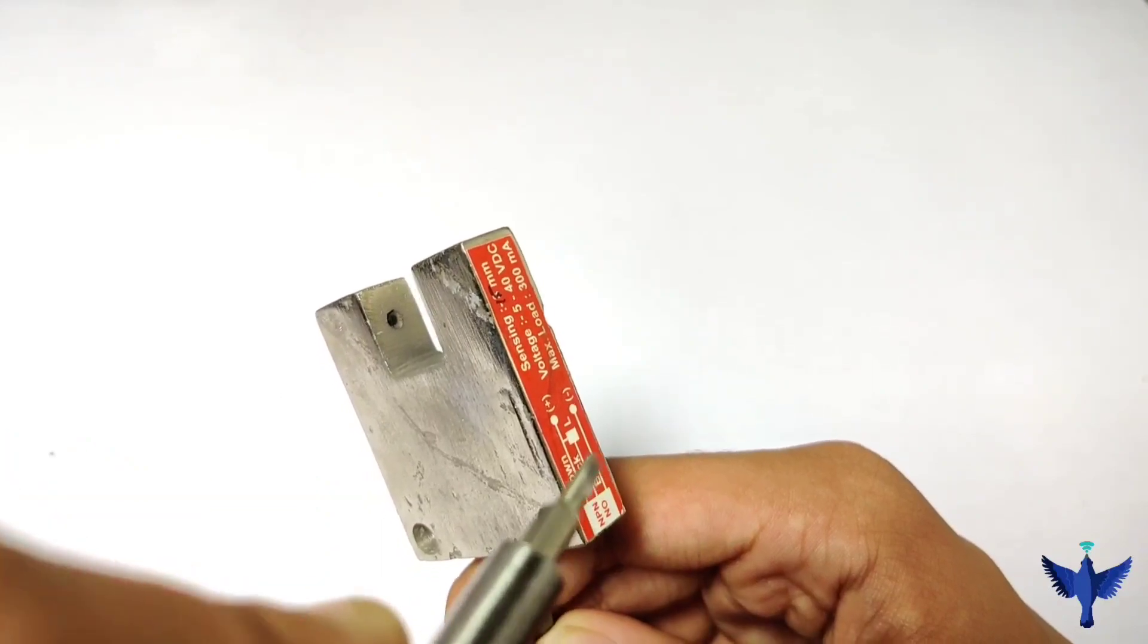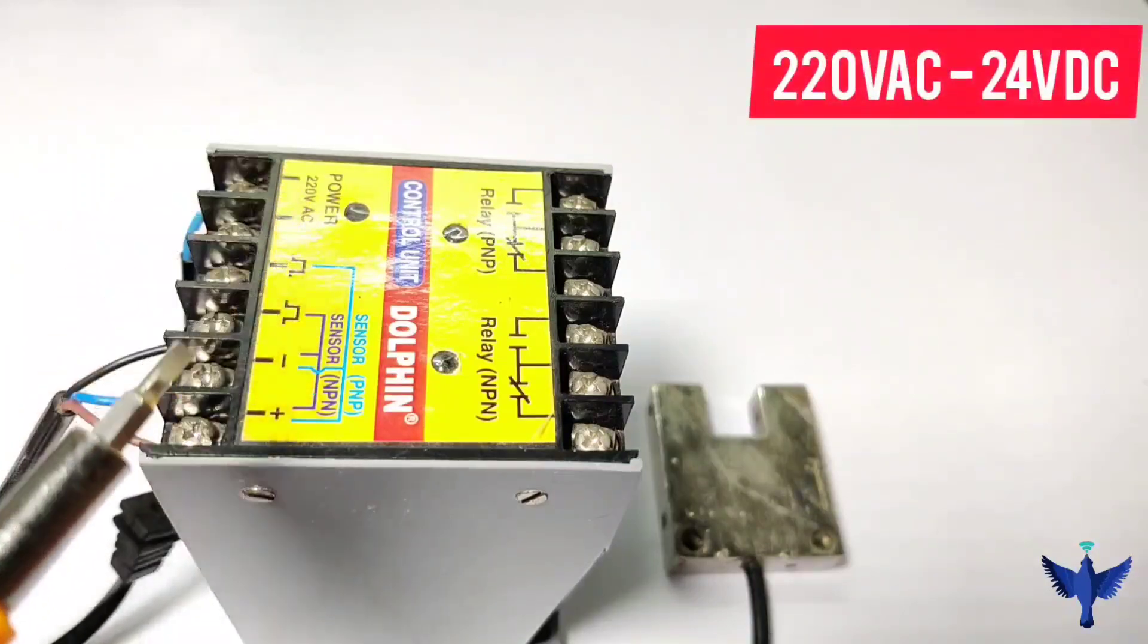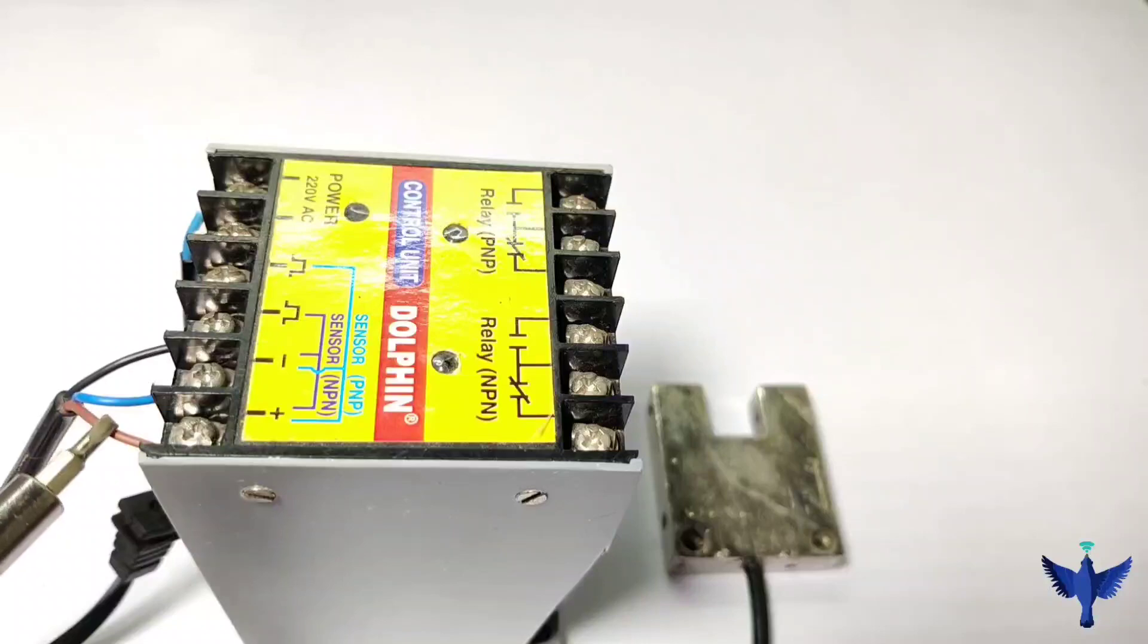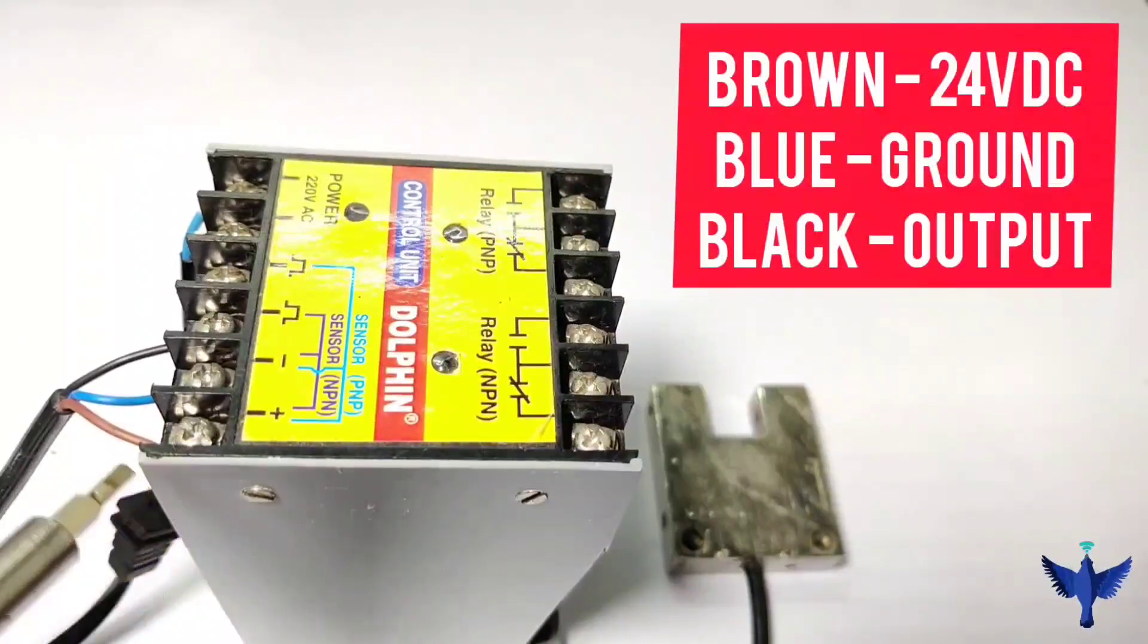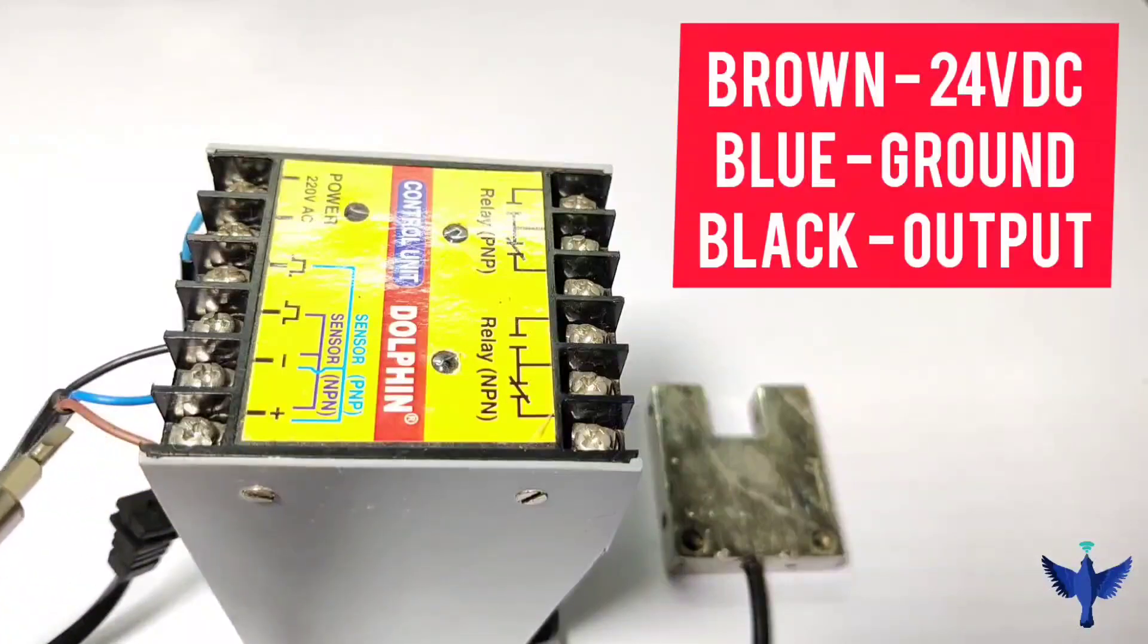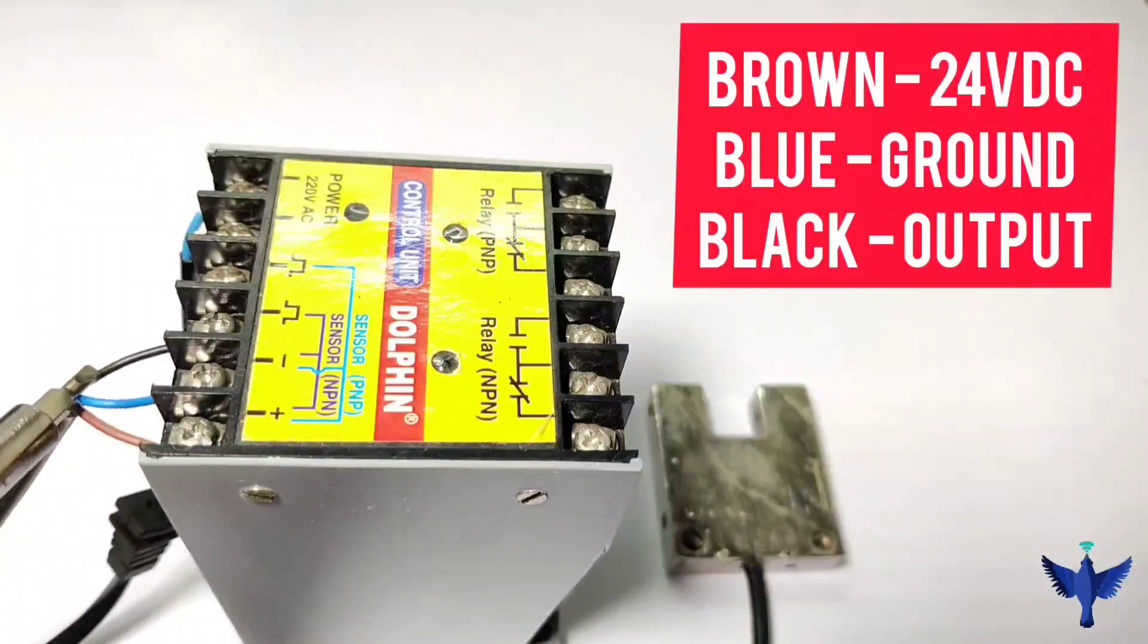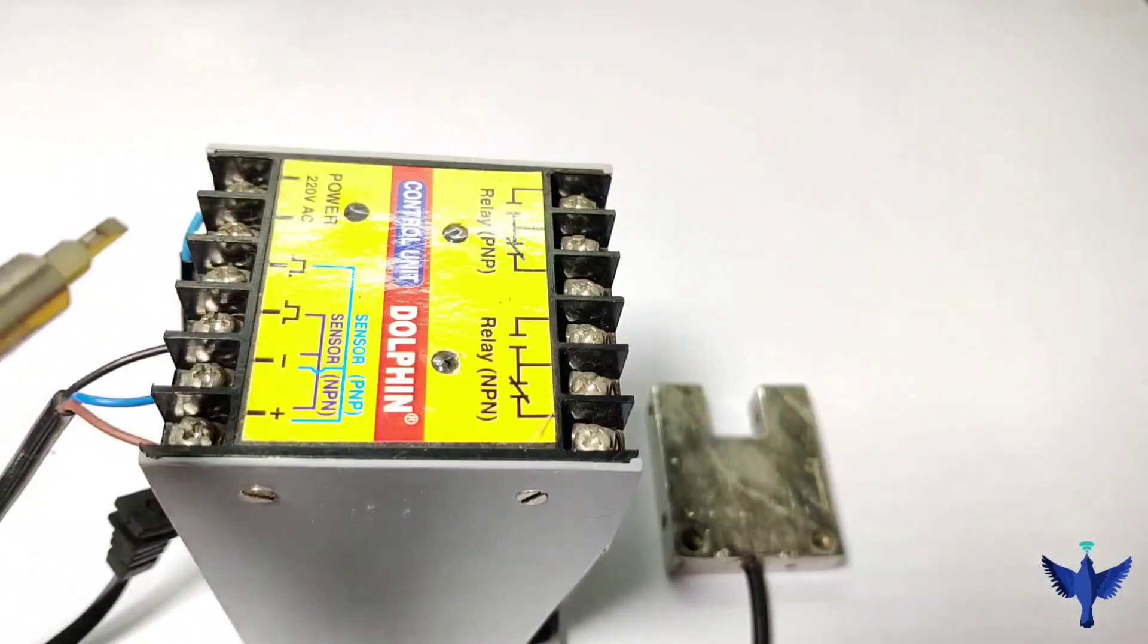Let's have a look at this connection. This is a control unit. It converts 220 volt VAC to 24 volt VDC positive and negative. The output positive wire of the sensor, which is the brown wire, is connected to the positive point 24 volt VDC. Blue wire is the negative wire which is connected to negative point. Black wire is output which is connected to the output and is internally connected to the relay of NPN type.